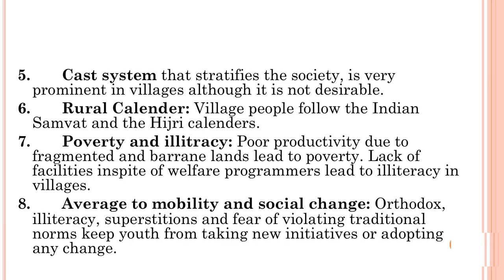The Jajmani system comprises land owners from upper castes and service providers from lower caste levels, who are paid in cash or kind. The caste system, which stratifies society, is very prominent in villages although it is not desirable. Sixth is the rural calendar — village people follow the Indian Samvat and the Hijri calendar. Seventh is poverty and illiteracy — poor productivity due to fragmented and barren lands leads to poverty and illiteracy in villages. Eighth, aversion to mobility and social change — orthodoxy, superstition and fear of violating traditional norms keep youth from taking new initiatives or adopting changes.